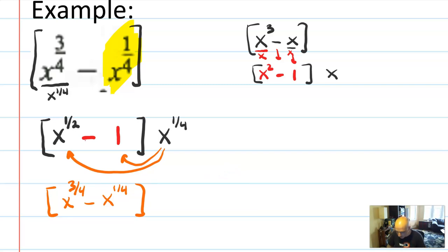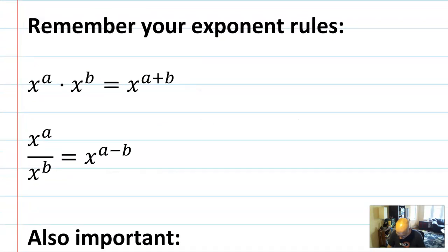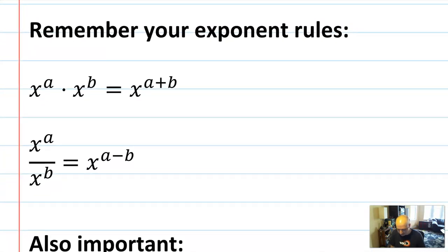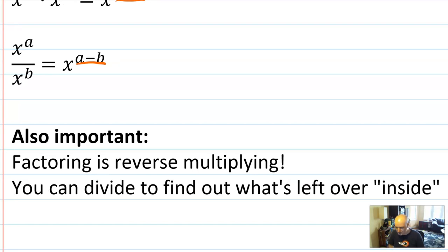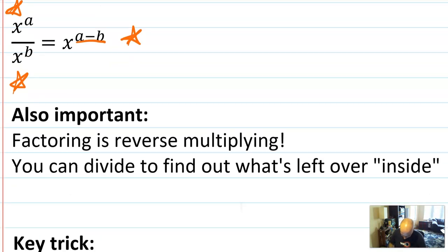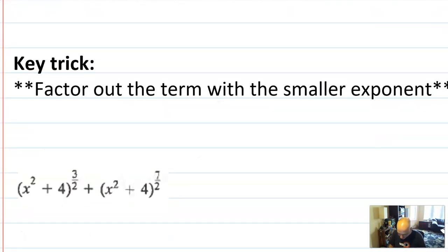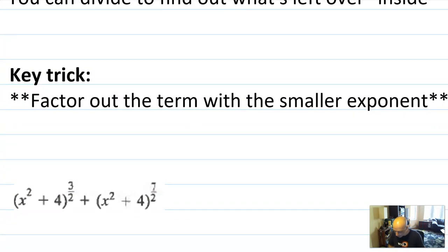So that was the example. Now we're going to go into the theory, and I'll give you some advice, and then we'll do a bunch of examples. First hint: remember your exponent rules. When multiplying things with the same base, you add the exponents; when dividing, you subtract the exponents. Second, factoring is really reverse multiplying, so when you're factoring things out, you're kind of dividing the inside — which means we usually end up subtracting those exponents.